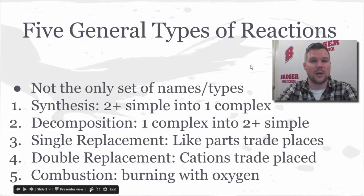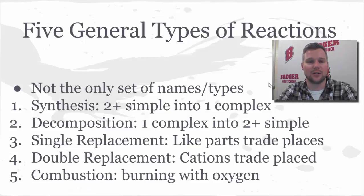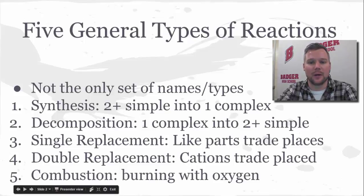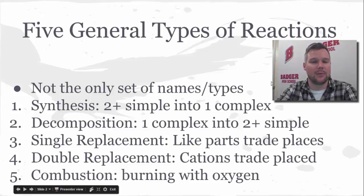We talk about synthesis, where two or more relatively simple things turn into one complicated product — there will only be one product for a synthesis reaction. Decomposition is the exact reverse, where we take one relatively complex reactant and turn it into two or more simple products. Single replacement is where similar parts trade: metals trade with metals, non-metals trade with non-metals. Double replacement is where cations trade places, and combustion is burning in the presence of oxygen.